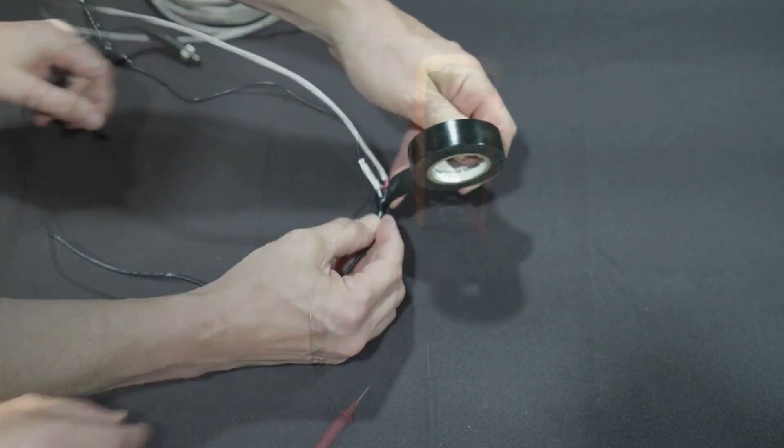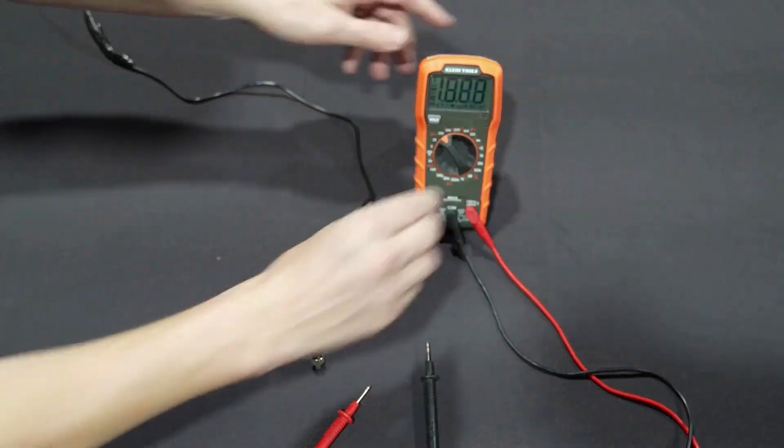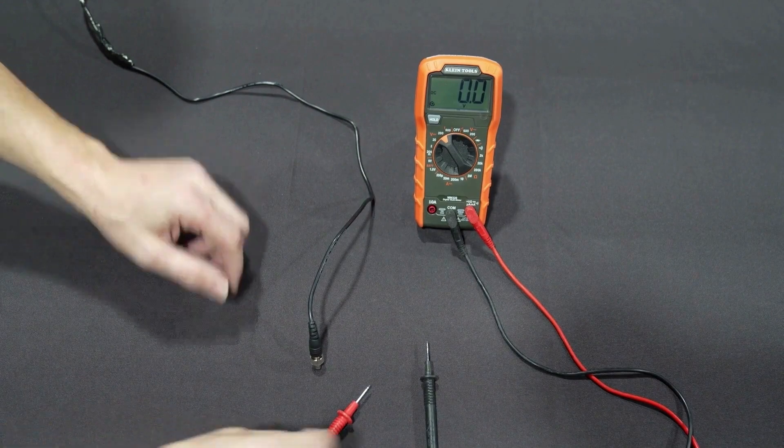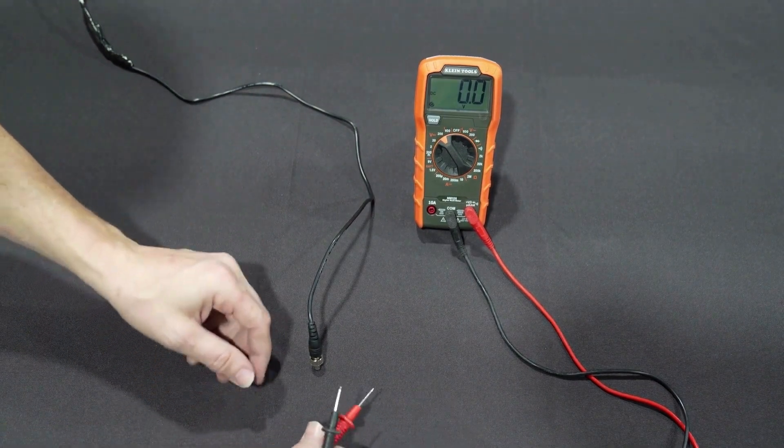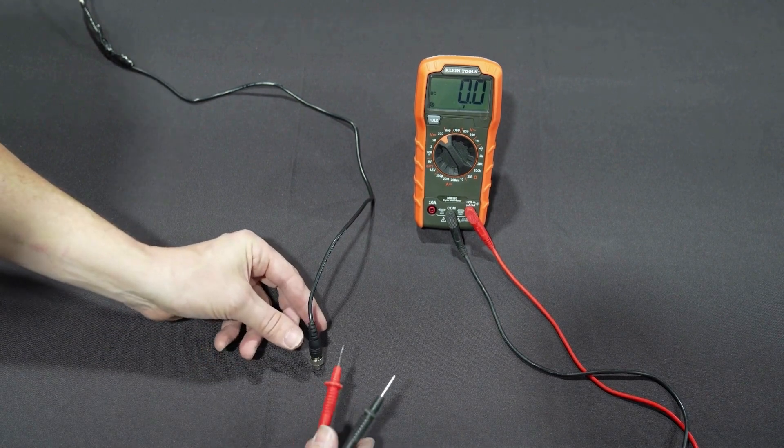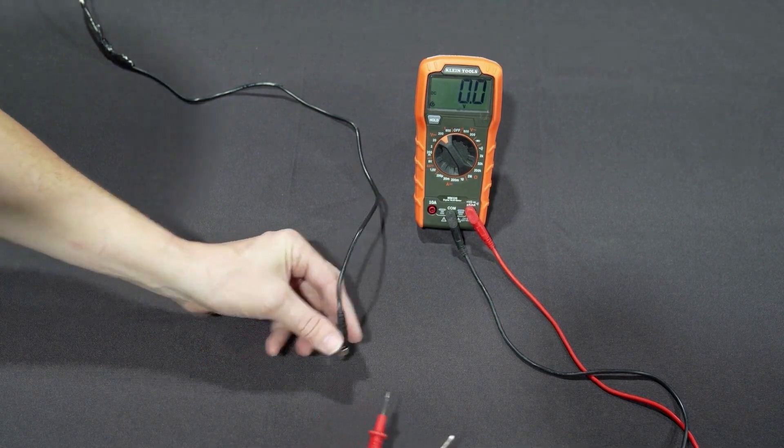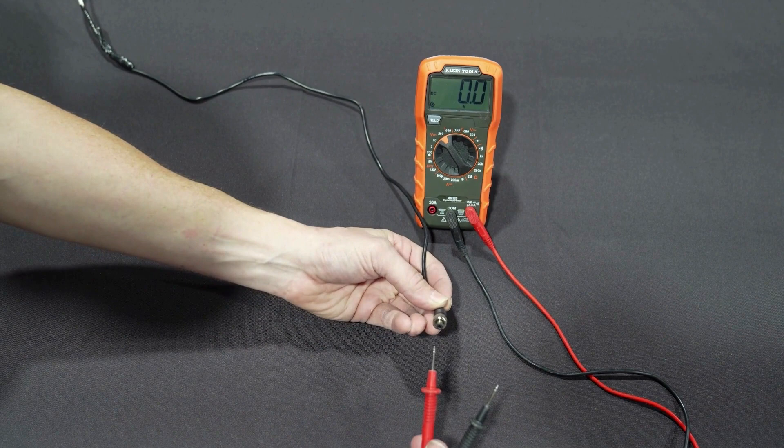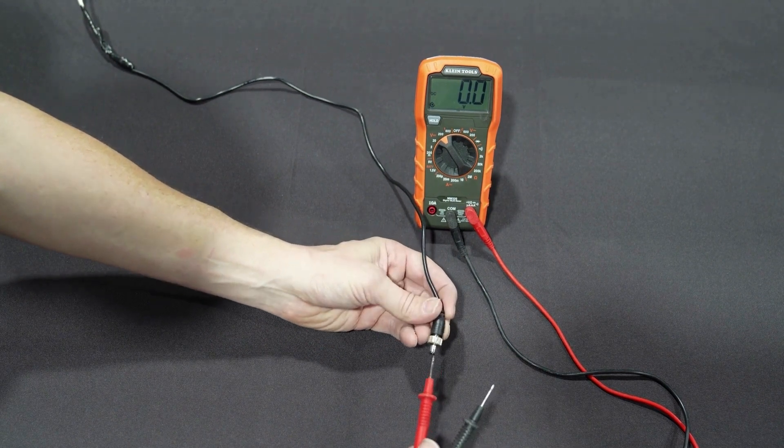Next, use a multimeter to test the splice for polarity and continuity and ensure there are no shorts or polarity issues. Set the multimeter to DC in the 200 volt range. The barrel connector has the positive inside the barrel and the negative on the outside.